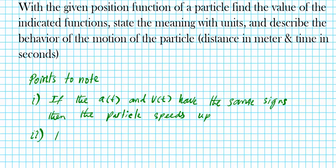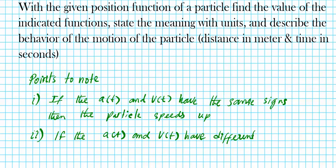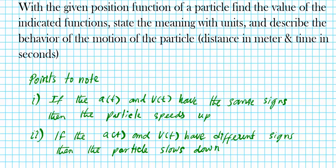Now if the acceleration and velocity v(t) have different signs — like one is positive and the other is negative — then the particle slows down.